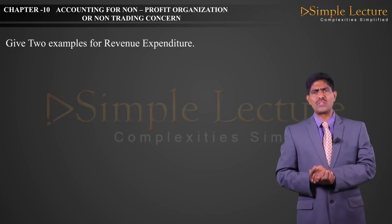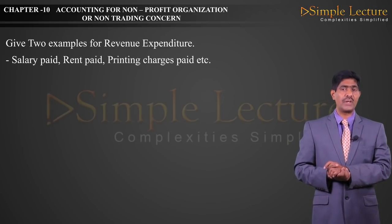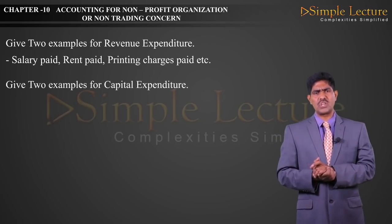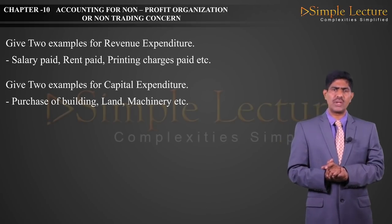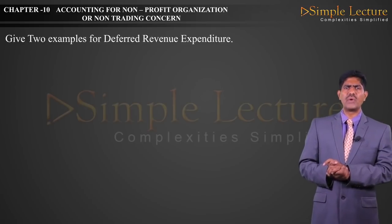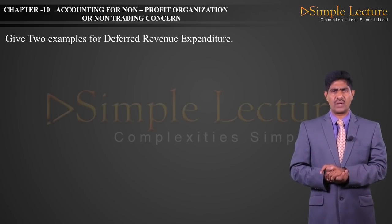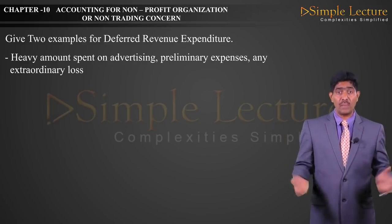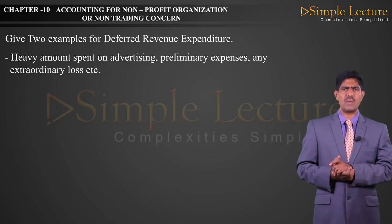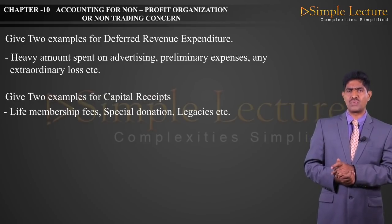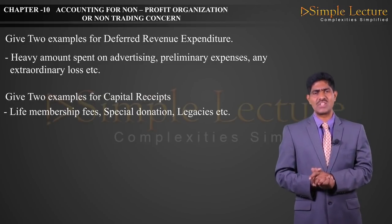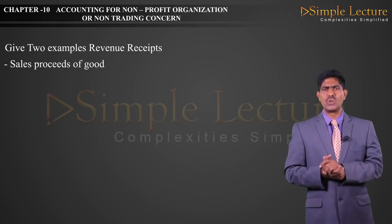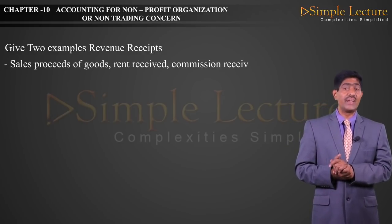Two examples for revenue expenditure: salary paid, rent paid, printing charges, etc. Two examples for capital expenditure: purchase of building, land purchase, machinery purchase, etc. Two examples for deferred revenue expenditure: a large amount spent on advertisement, preliminary expenses, and a large amount spent on repairs, etc. Two examples for capital receipts: life membership fees, special donation, legacies received, etc. Two examples for revenue receipts: sale of goods, rent received, commission received, interest received, etc.